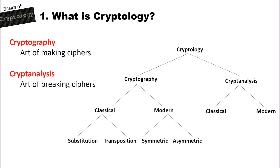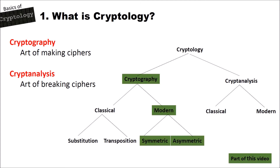As with all videos in the Basics of Cryptology series, we will first have a look at where we are with respect to this graph. Cryptology consists of cryptography and cryptanalysis. This video deals with modern cryptography — both symmetric and asymmetric — since random numbers are needed for both.